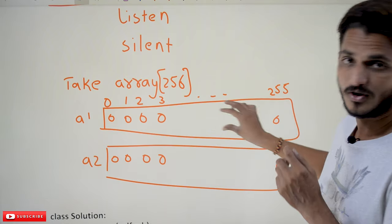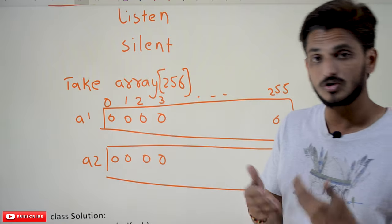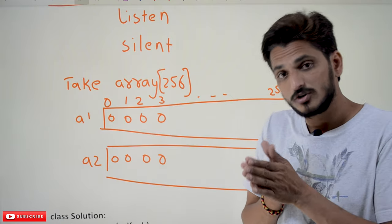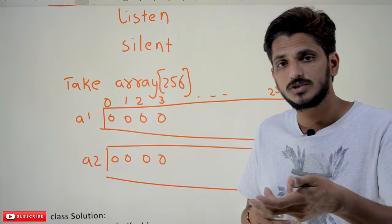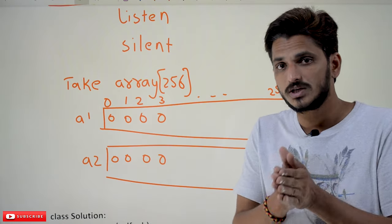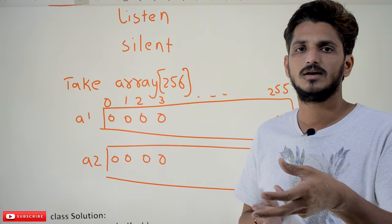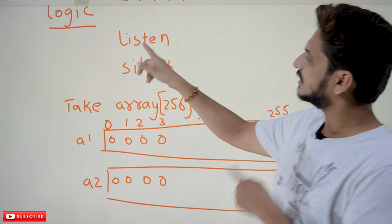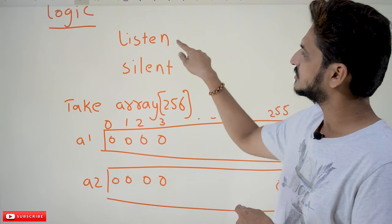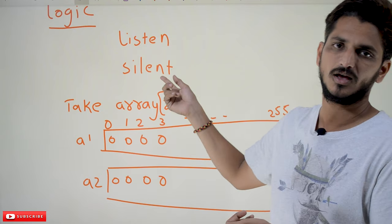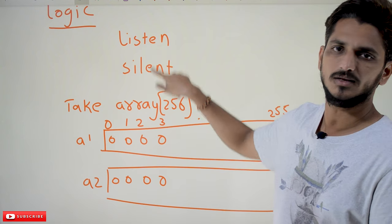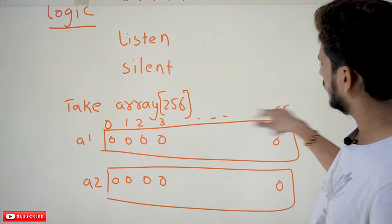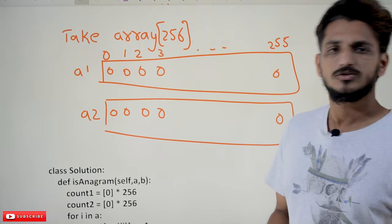We take an array of size 256 to store counts at ASCII value indexes. This is the key point to remember when solving string problems — if there is a chance to use ASCII values, try to use it. Since we iterate through all characters of string A and all characters of string B, the time complexity is O(a+b), and that's how we maintain that complexity.